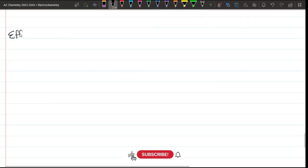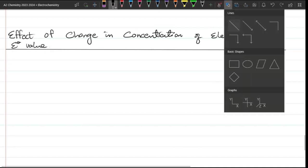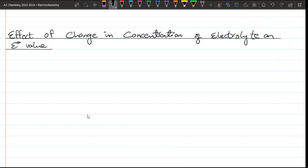Effect of change in concentration of electrolyte on E° value. Fe³⁺ plus electron equilibrium Fe²⁺. E° value is positive 0.77 volts.